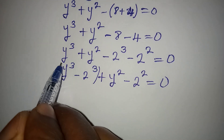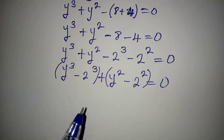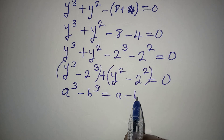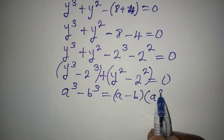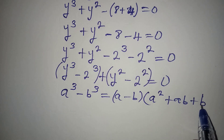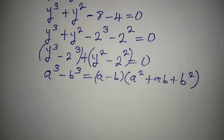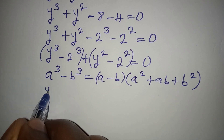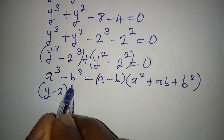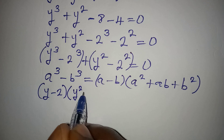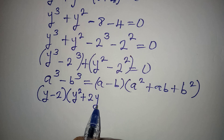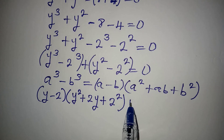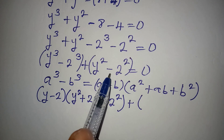Now I can group it like this and apply the standard formula: a to the power of 3 minus b to the power of 3 equals a minus b, times a squared plus ab plus b squared. Our a is y and our b is 2. So in place of a minus b we have y minus 2, then in the second bracket we have y squared plus ab which is 2y, then plus 2 squared. Then plus — in the next bracket — we are having difference of two squares.